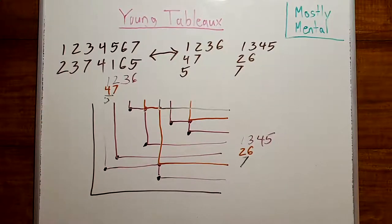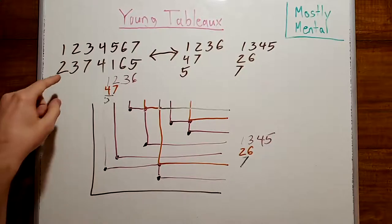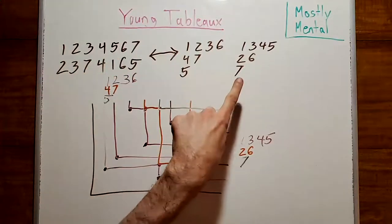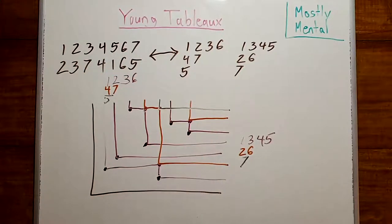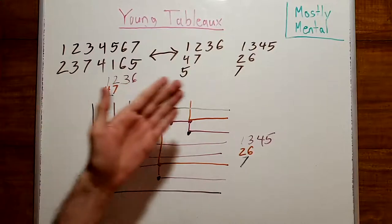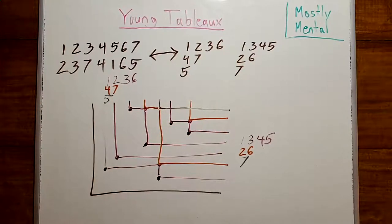This whole procedure is an example of what's known as an algorithmic proof. That is, we aren't directly describing how these numbers get translated into these. Instead, we're describing a sequence of steps that we can take, which will eventually transform one into the other. And these sorts of proofs are common in several fields of math, but they're particularly common in combinatorics. I find them really elegant, and I hope you do too.